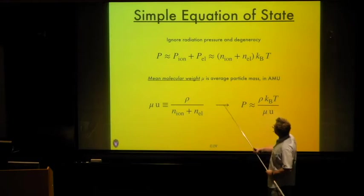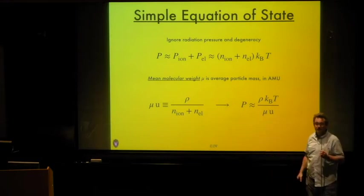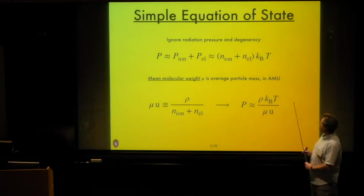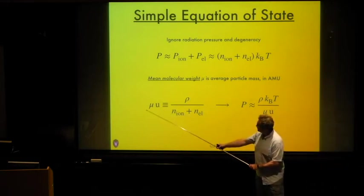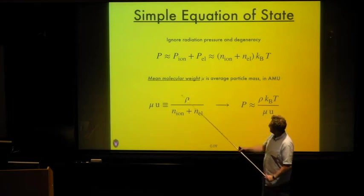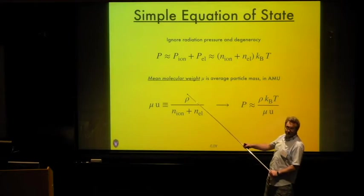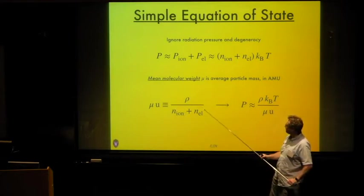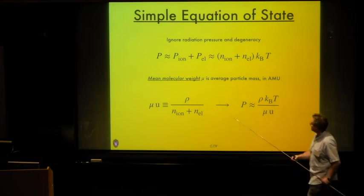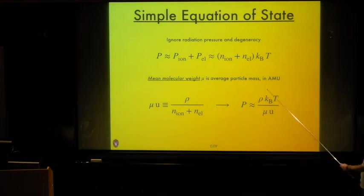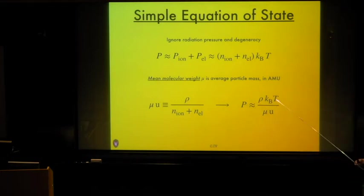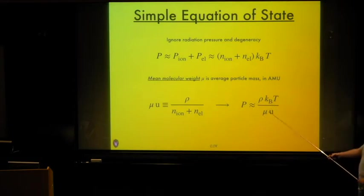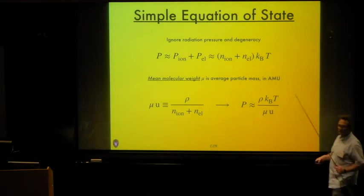The mean molecular weight μ is just the average mass per particle — averaged over ions and electrons — in atomic mass units. So μ times the atomic mass unit u is by definition the same as the ratio between the mass density ρ and the total particle number density (ions plus electrons). Using this expression, we can rewrite the equation of state in the form that appears in many stellar astrophysics textbooks: P = ρ k T / (μ u).